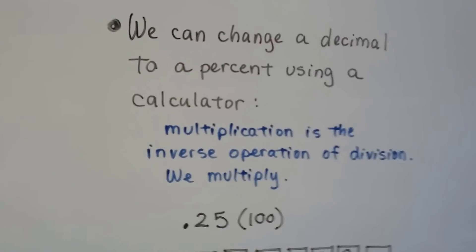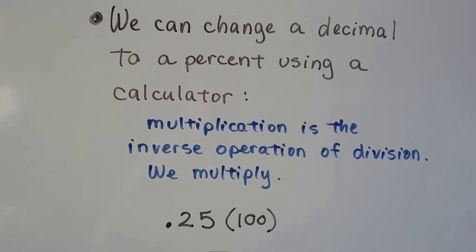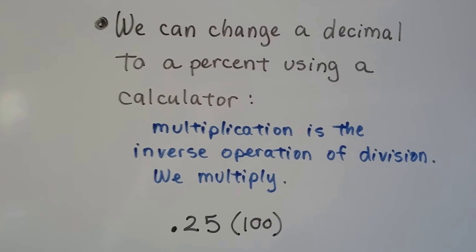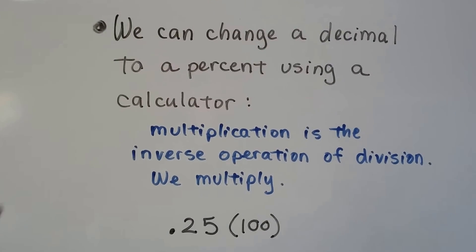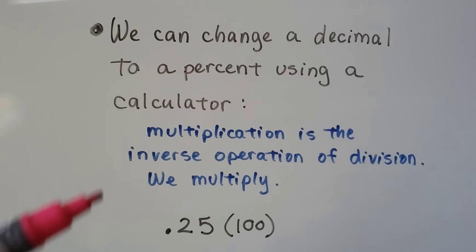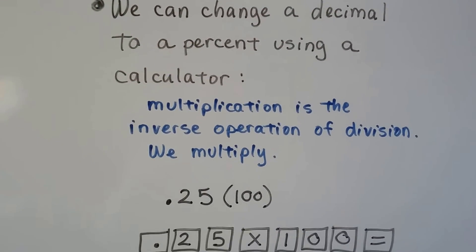And we can change a decimal to a percent using a calculator. Now in the last video, we used division to change it from a percent to a decimal. Now we're going from a decimal to a percent, and because we're doing the opposite thing, we're going to use multiplication, because it's the inverse of division.